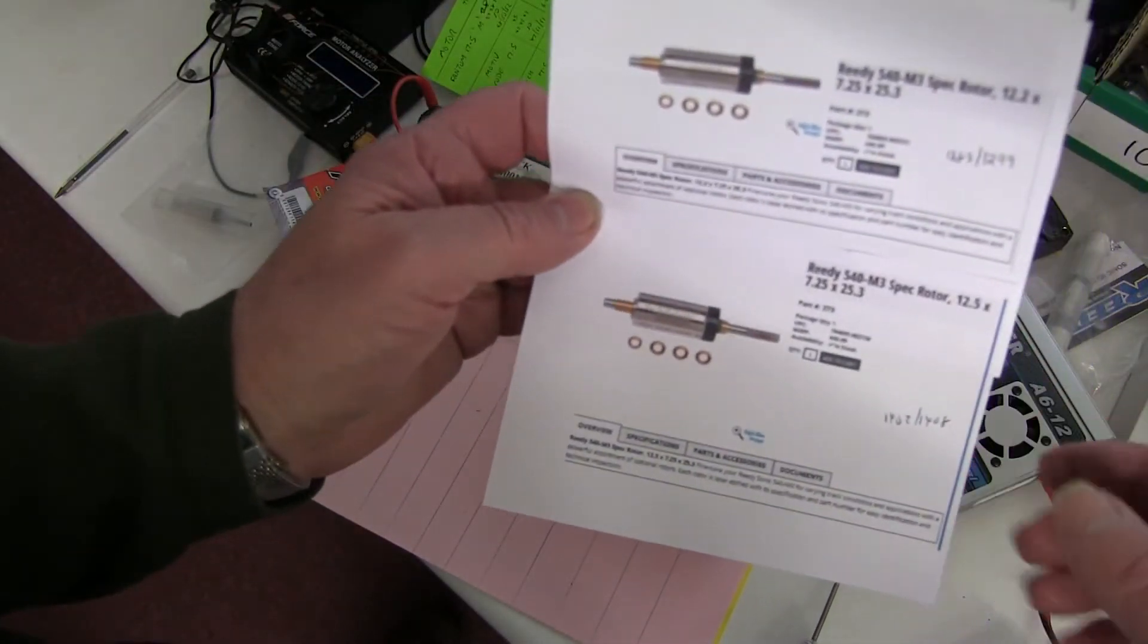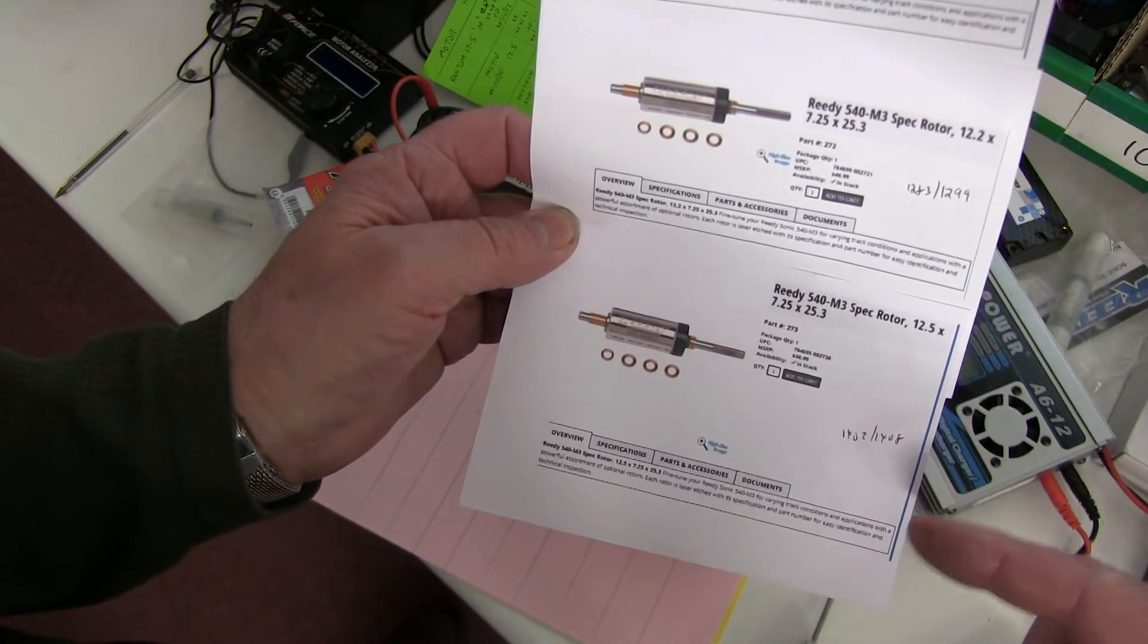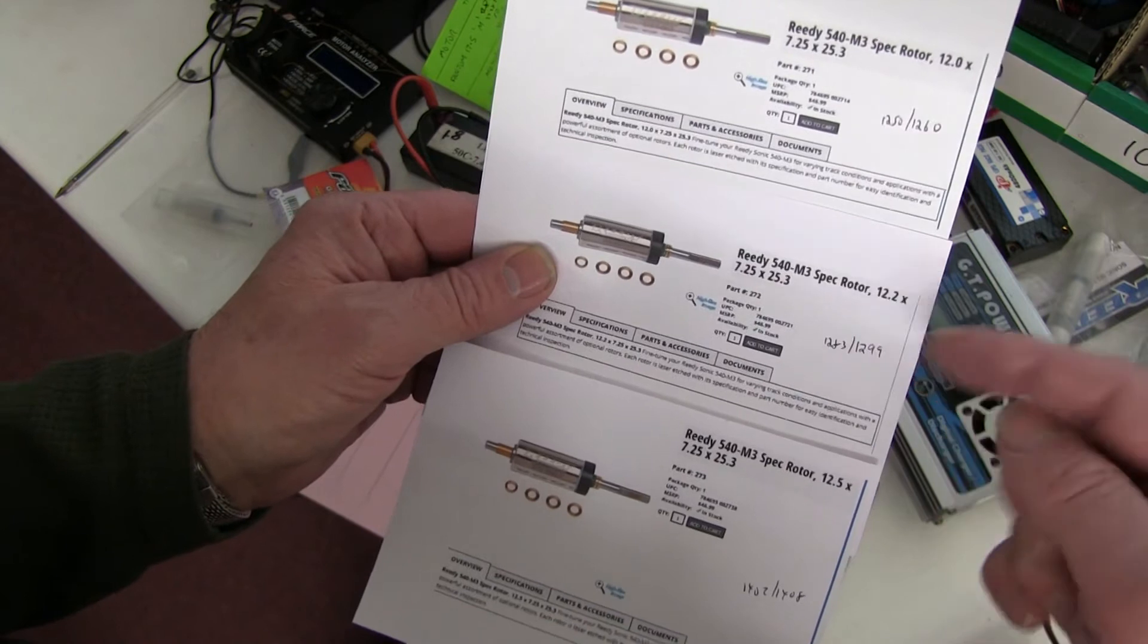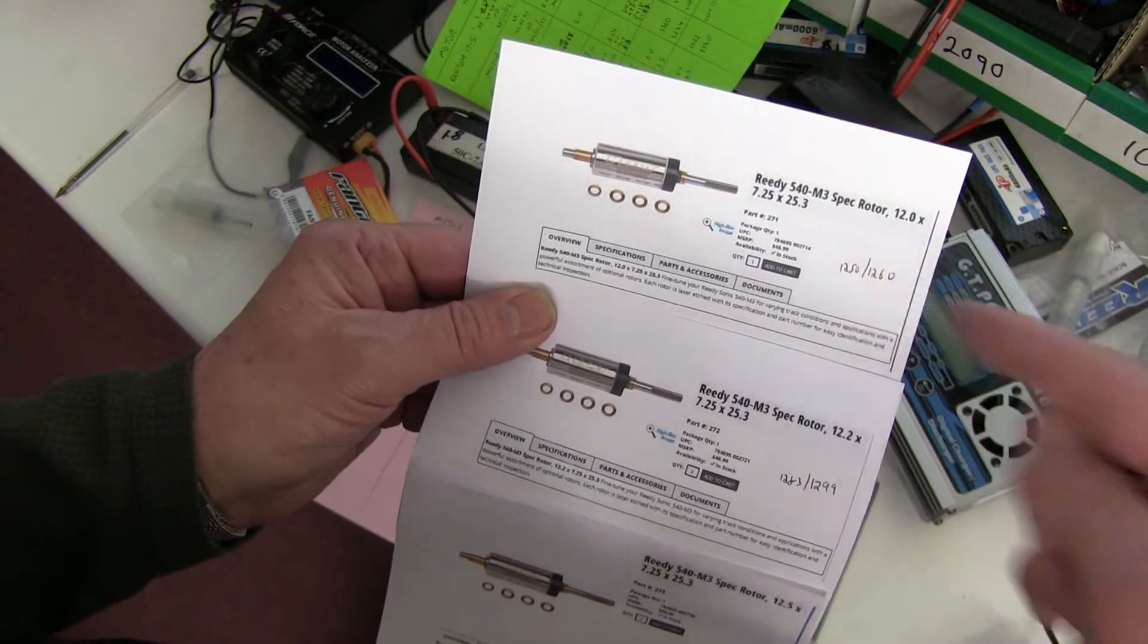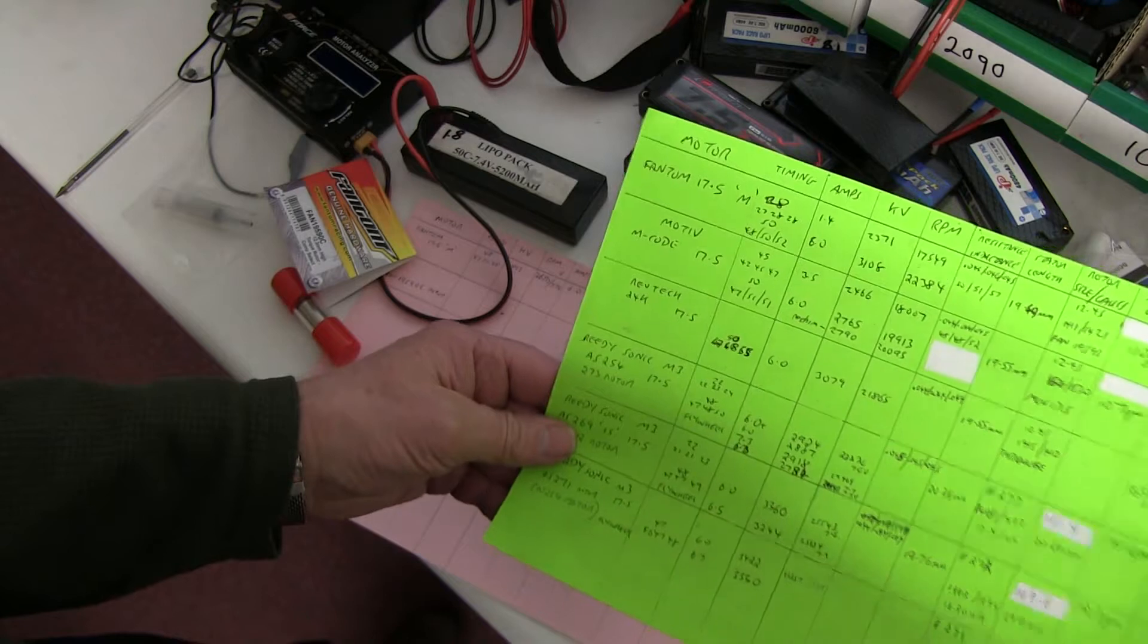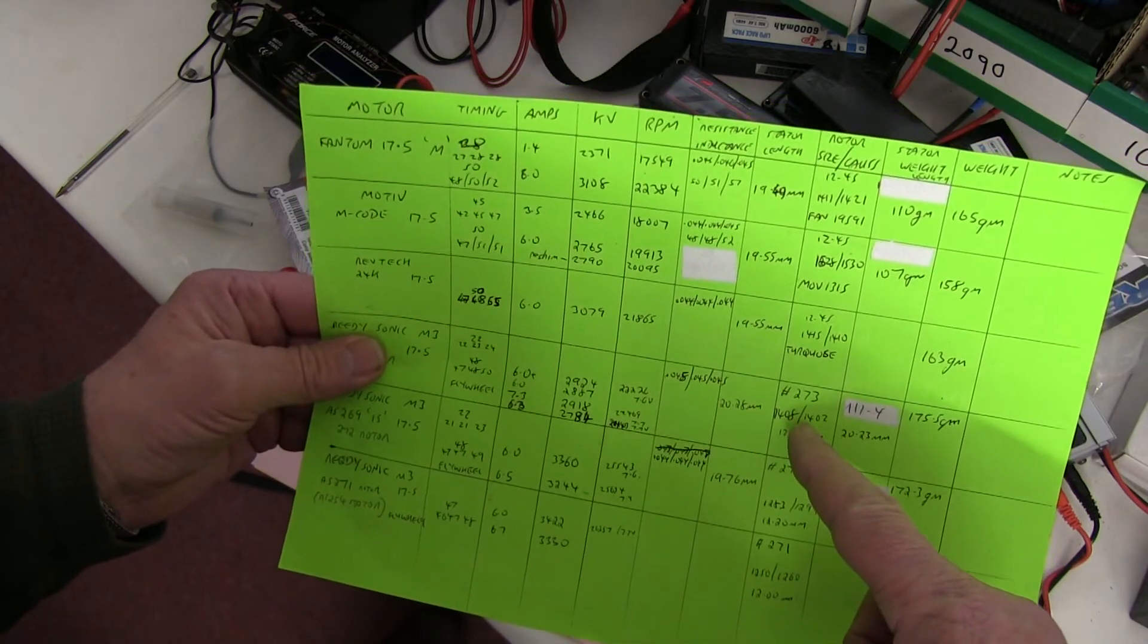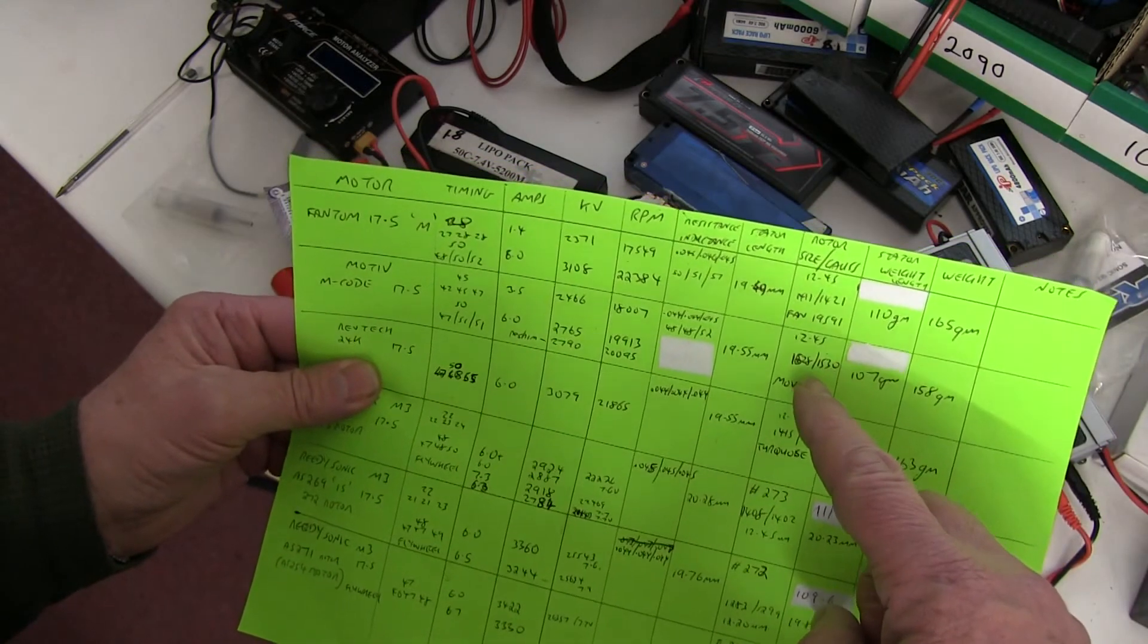Here is the Reedy standard 12.5. They call it 12.5, it's 12.45. That's about 1400 Gauss. The Reedy 12.2 is only 1300, and the 12 is about 12.50. Other ones I've measured, the RevTech one, the standard Gauss was about 1400. And the Motive M code was very high, over 1500 Gauss.